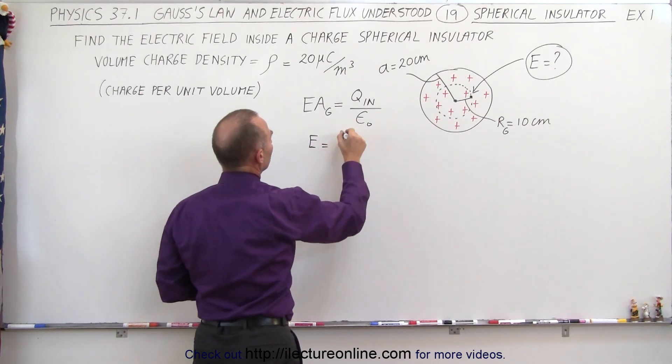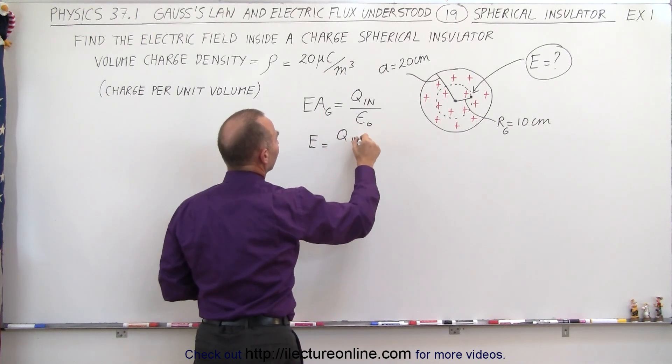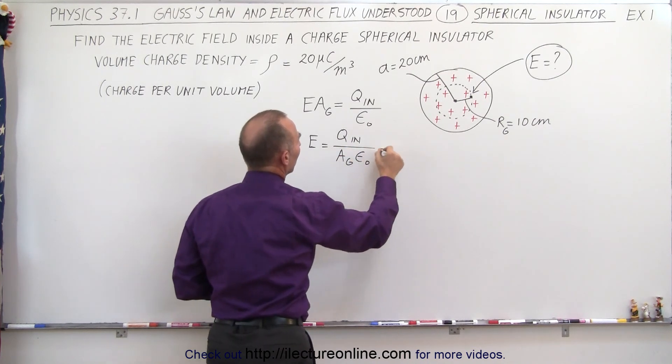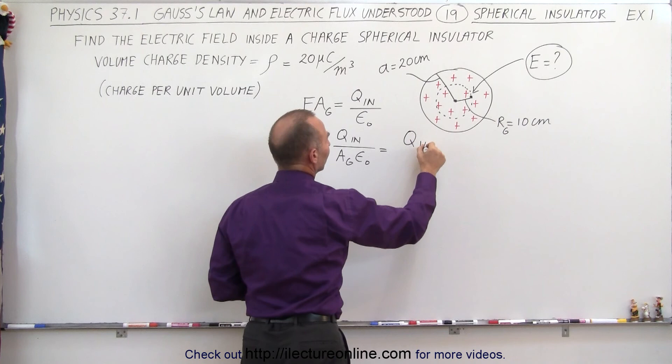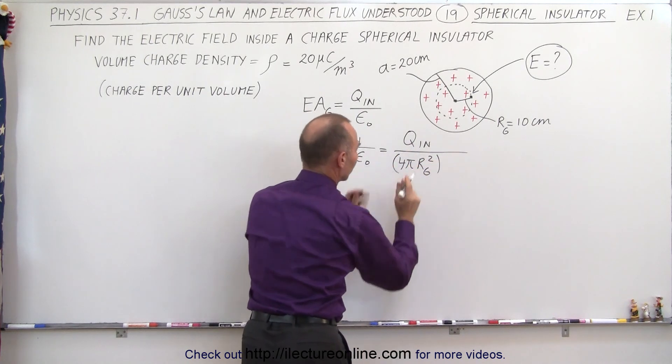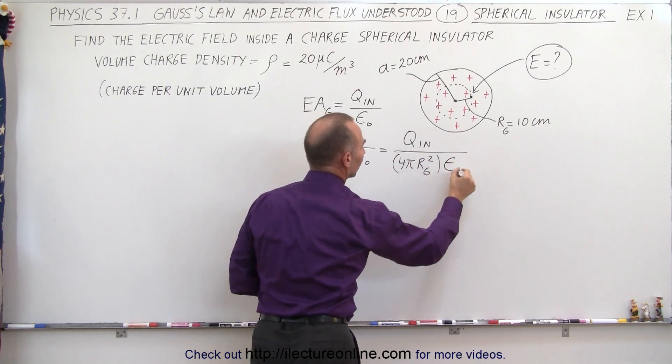E is equal to the charge inside divided by the surface area of the Gaussian surface times epsilon sub naught, which can be written as Q inside divided by 4π times the radius of the Gaussian surface squared. This is the surface area of a sphere times epsilon sub naught.